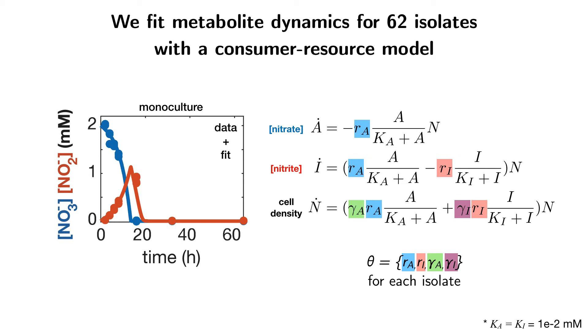For each of our 62 isolates, we can pretty well parameterize and capture the dynamics using this model and these four parameters. This model gives us not only a way to characterize the metabolic dynamics of individual strains, but also a prediction for community dynamics.